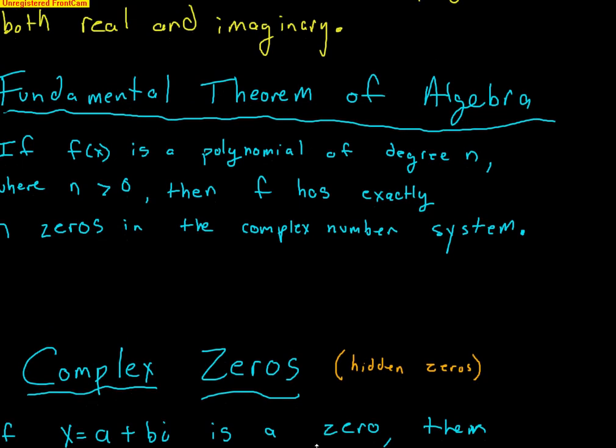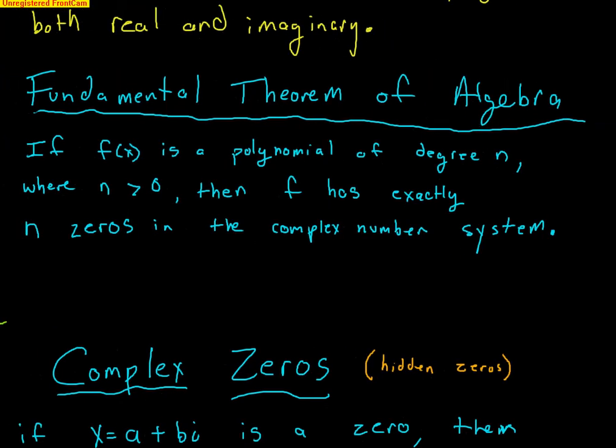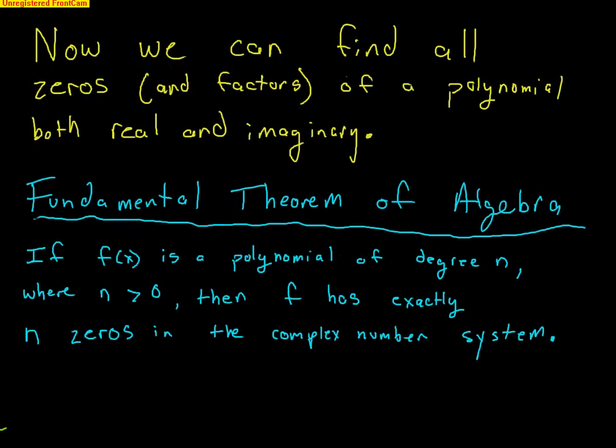This brings us to our main theorem: finding the complete factorization using the Fundamental Theorem of Algebra. It states: if f(x) is a polynomial of degree n where n > 1, then f has exactly n zeros in the complex number system. Whatever the degree of your polynomial, that's exactly how many zeros — and factors — you have, whether real or complex.